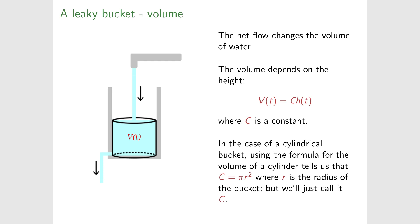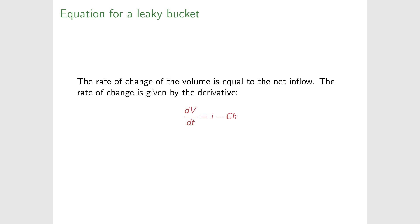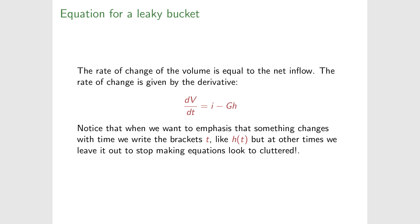The volume changes in time because the net flow into the bucket is not zero. The mathematical machinery for describing how something changes in time is the derivative. dV/dt is the change in volume per time, so dV/dt equals the net flow into the bucket: i minus G·h. Note that i, h, and V depend on time, while G is a constant. Since V equals C·h, we substitute to get C · dh/dt = i − G·h.